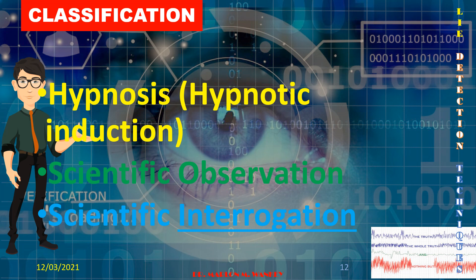Next is scientific interrogation. You may also apply techniques using brain scanner imaging, iris truth verifier, and others. Scientific observation will only come up with a perception, while scientific interrogation is an approach of rigorous questioning of the suspect using other scientific approaches.